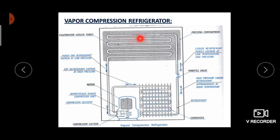Inside the evaporator, which is in the form of coiled tubes, some liquid refrigerant is present at low pressure and low temperature. This low pressure, low temperature liquid refrigerant absorbs the heat from the substance — in our example, the fruits — and by absorbing that heat, it changes its phase from liquid to vapor.